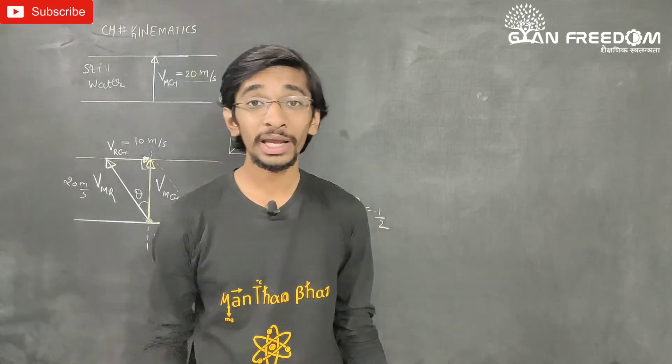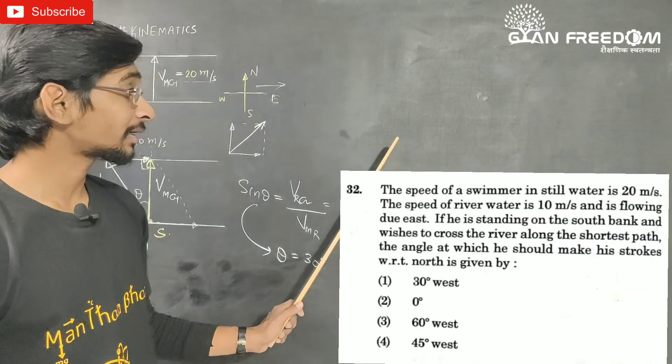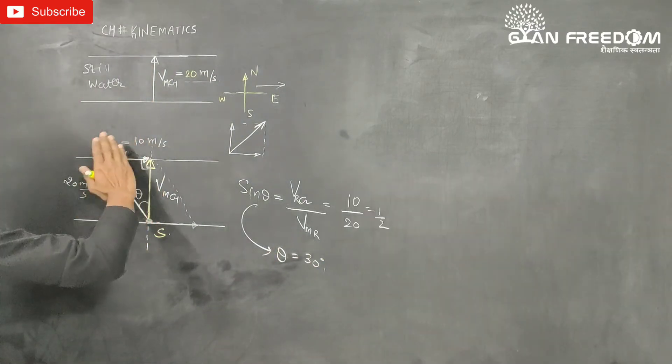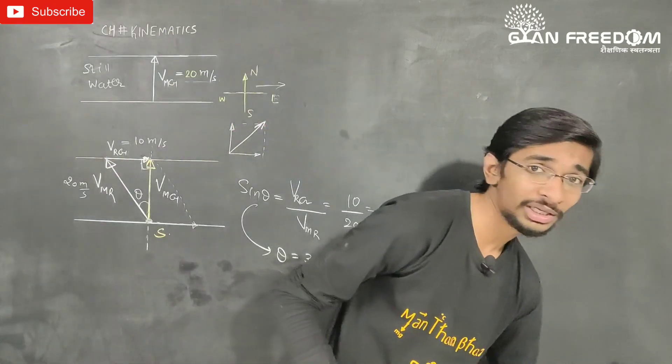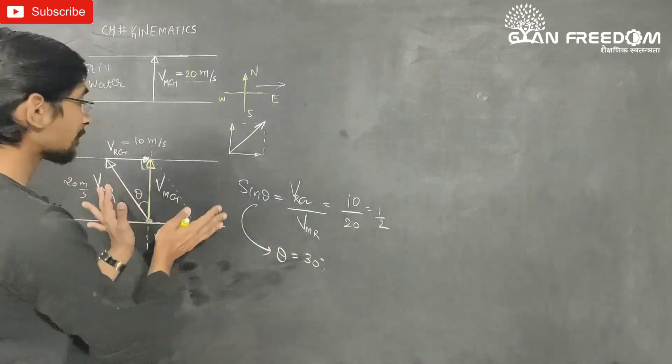30 degrees, so answer will be option one. This 30 degree will be west side, so this is fine. Important question was that if you don't know the concept that will be wrong or you will not be able to do it.